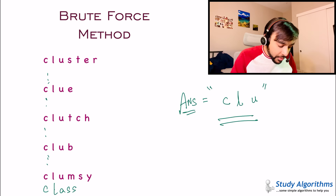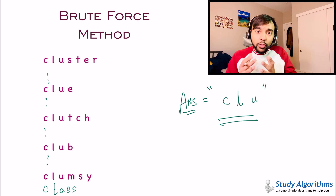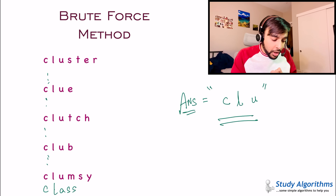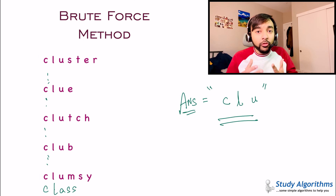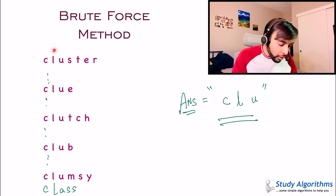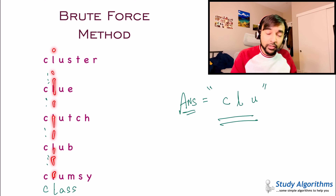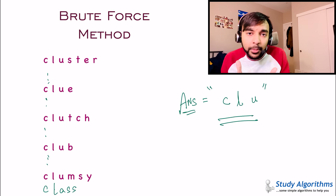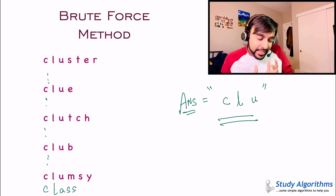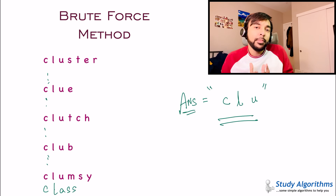So what are you going to do? You will take each letter and compare it with all these new words. Then you will move on to the second letter and again compare it with all these new words. So you are taking so much time to solve it. Certainly, this can be optimized.